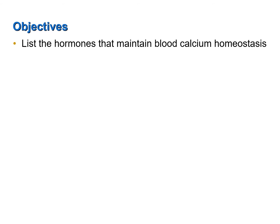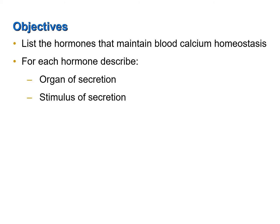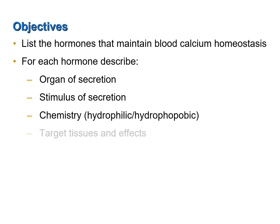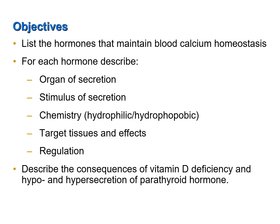This screencast was designed to achieve the following objectives: list the hormones that maintain blood calcium homeostasis; for each hormone, describe the organ of secretion, the stimulus of secretion, the chemistry of the hormones (whether they are hydrophilic or hydrophobic), the target tissues and effects, and how the hormones are regulated. Lastly, describe the consequences of vitamin D deficiency and hypo and hyper secretion of parathyroid hormone.